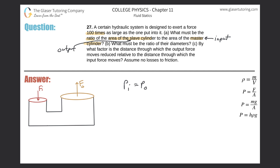Now I need to get area into this equation. The question asks for the ratio of the area of the slave (output) cylinder to the master (input) cylinder. I'll substitute: input force divided by input area equals output force divided by output area. So F_in / A_in = F_out / A_out.